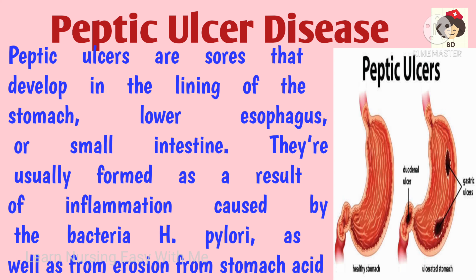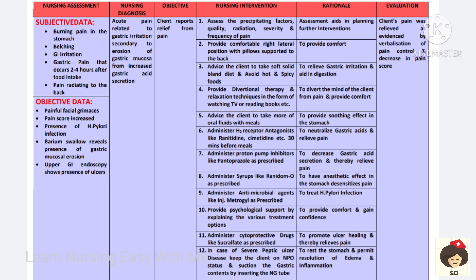This can result in gastric irritation and injury to the gastric mucosa. The first diagnosis is acute pain related to gastric irritation secondary to erosion of the gastric mucosa from increased gastric acid secretion. Peptic ulcers cause irritation and erosion of the gastric mucosa where the nerves are also getting eroded, resulting in pain.